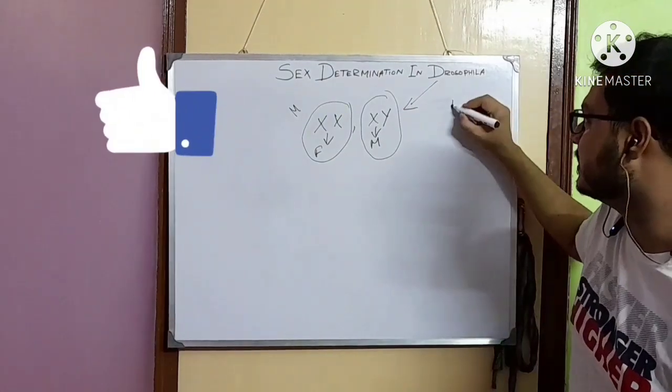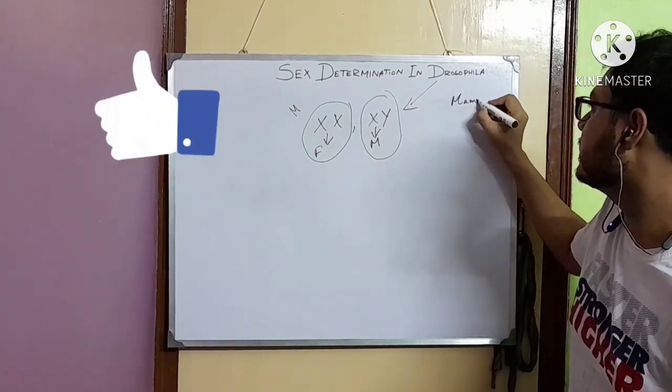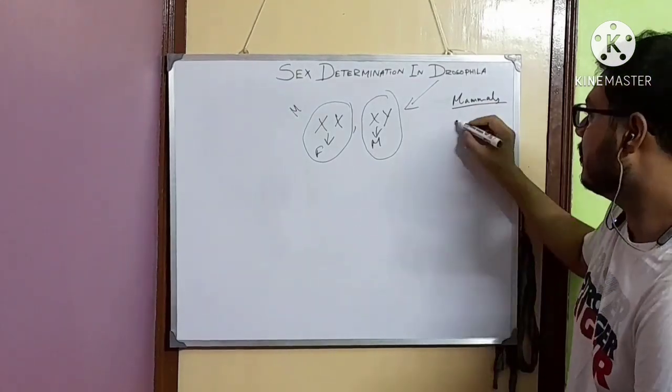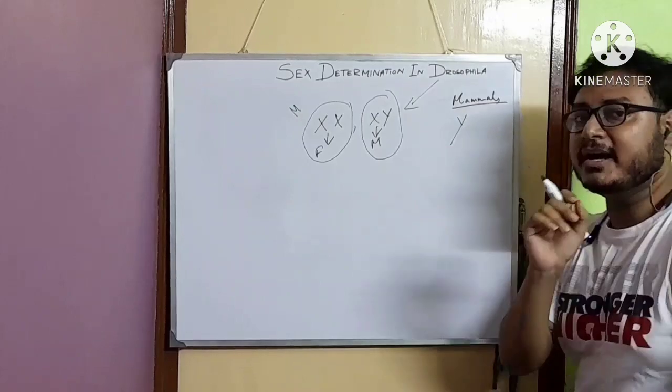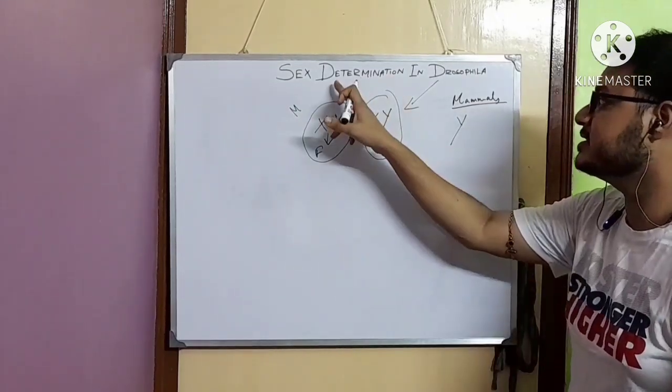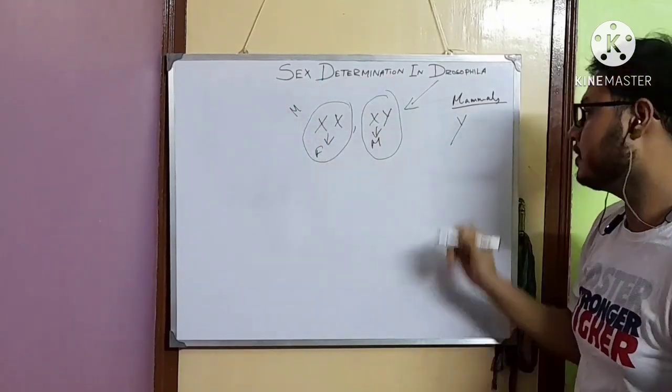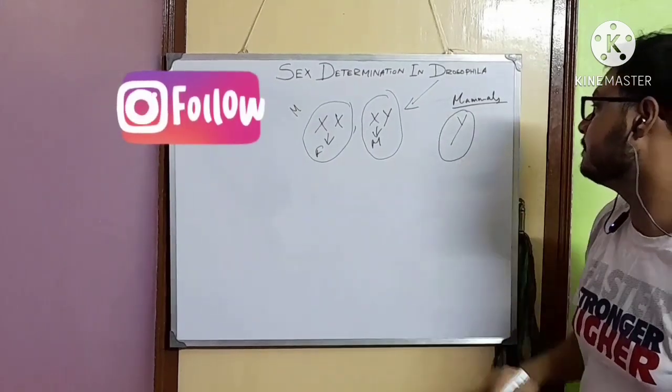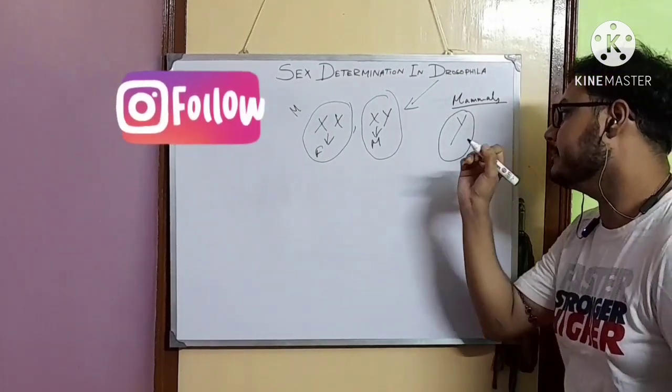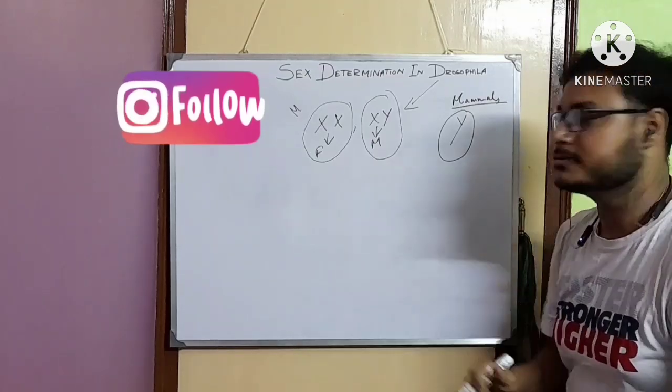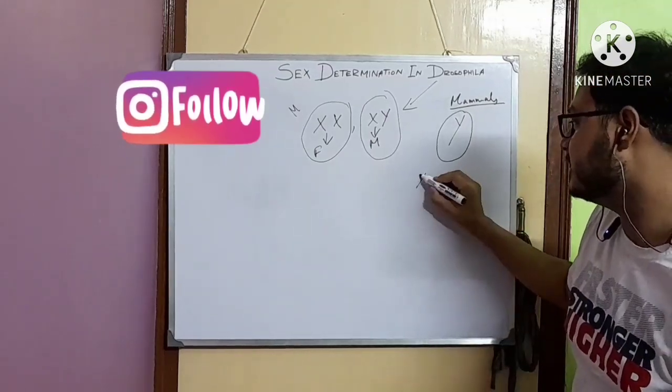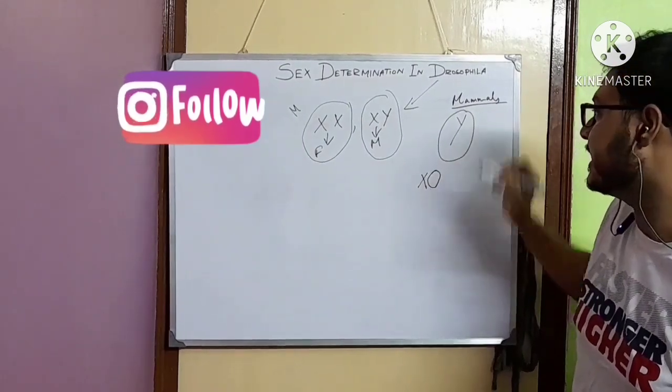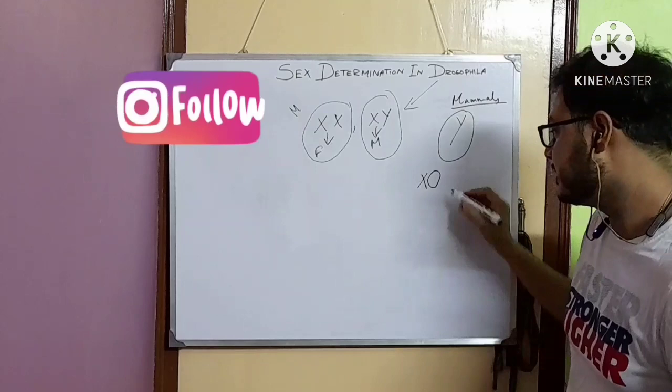In case of mammals, the Y chromosome plays a pivotal role in determination of sex. The Y chromosome is the main determinant factor of maleness in mammals. So individuals with XO will be female in mammals.